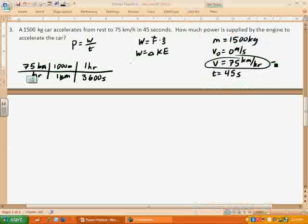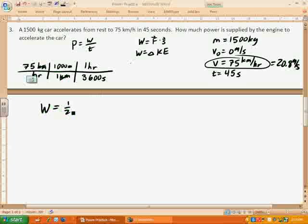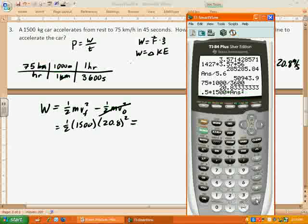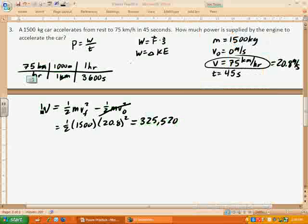So that's 20.8 meters per second. Now we can say, in order to get power, we need work, and to get work, we can use either the force and displacement, or we can use the change in kinetic energy. I know the mass and the velocity, so the change in kinetic energy is probably going to be the easiest. So work equals the change in kinetic energy, which is 0.5 MV squared final minus 0.5 MV squared initial. So that will be 0.5 times 1500 times the final velocity, which was 20.8 squared, and the initial velocity was 0, so that's going to cancel out. So we got 325,520, and that was my work, which is in joules.